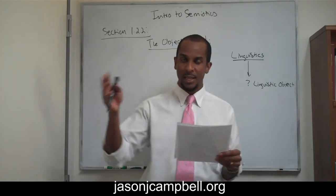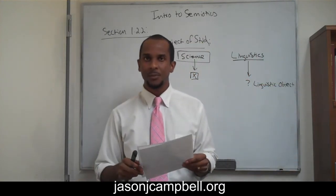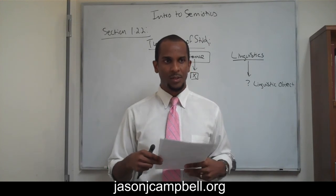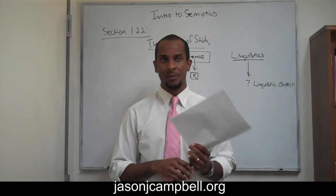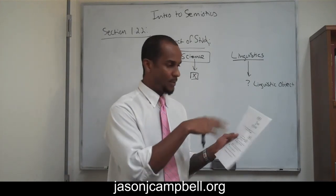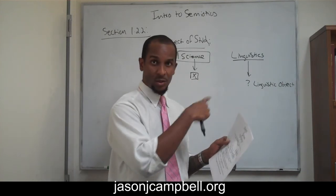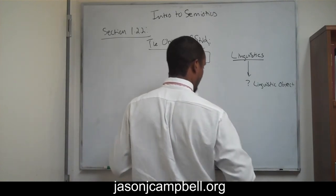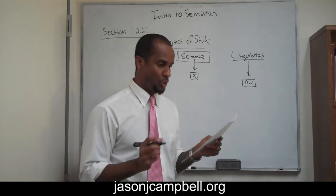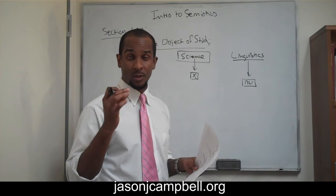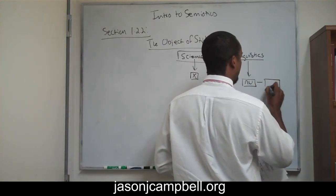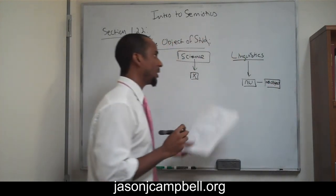For Saussure, and again we're tracing our ideas along with his conceptual development throughout the Course in General Linguistics, he gives what I thought was a very, very good analysis of the French term 'nu,' which means naked. I've embedded this image in the PDF — I went into Paint, created the image, copied it in — but I'm going to draw it again on the board. Imagine that we have linguistics, and we have the term, the word 'nu.' If we analyze the term 'nu,' the question is: are we analyzing the term as object? Are we analyzing the term 'nu' as object?